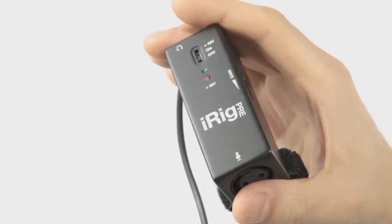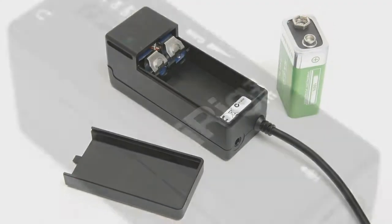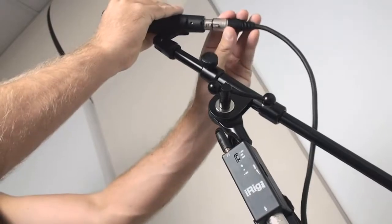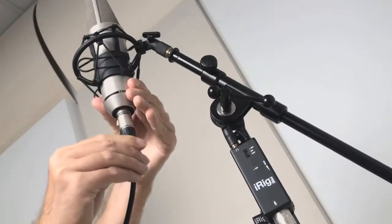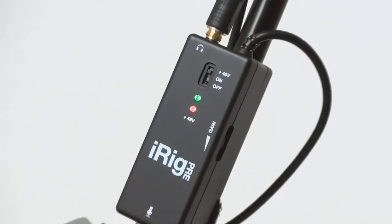It's the first fully portable battery powered microphone preamplifier for the iOS platform. From handheld dynamic mics to studio condenser mics, iRig Pre can accommodate them all.